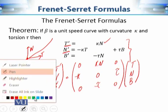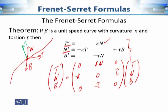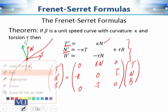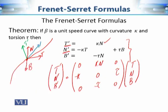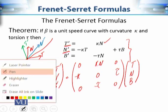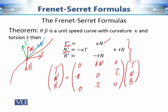At any point on the curve we have three mutually orthogonal unit vectors T, N, and B, so we can express T', N', and B' as linear combinations of these three vectors. That is the first important point. The second important point is about the matrix of coefficients.